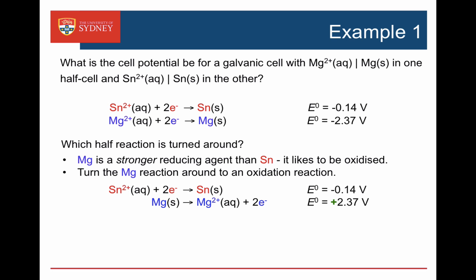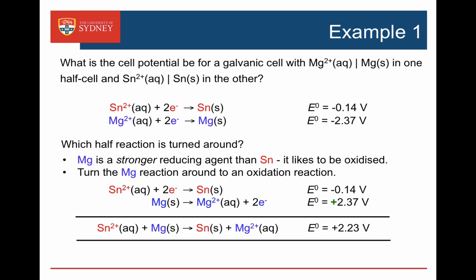Now we couple it with the zinc reduction half cell: zinc 2+ plus 2 electrons goes to zinc. Adding the two things together, the electrons cancel because both involve two electrons. We get the reaction between zinc 2+ ions and magnesium going to zinc metal and magnesium 2+. Adding the two half cell potentials — minus 0.14 and plus 2.37 — gives a total cell potential of 2.23 volts.